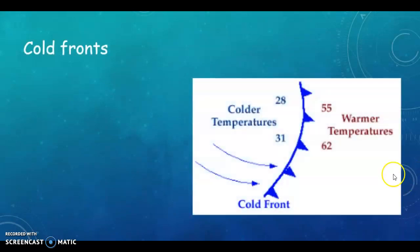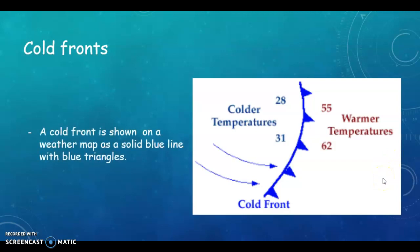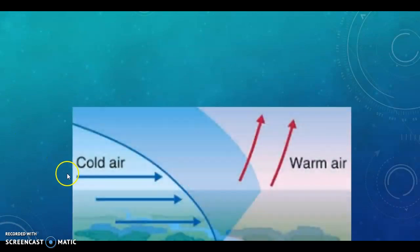Your cold fronts. So this is what it looks like. You have your blue line with your blue triangles and you have cold air moving in over or under warm air. So a cold front is shown on the weather map as a solid blue line with blue triangles. And it happens as your cold air moves in under your warm air.